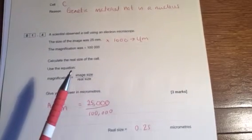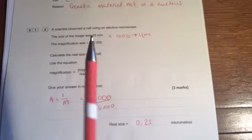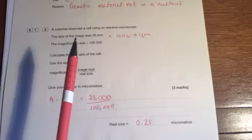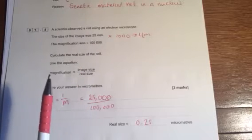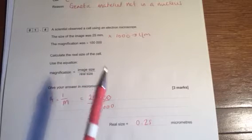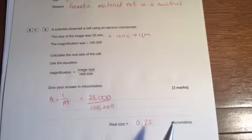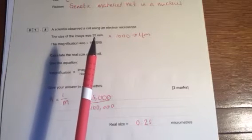Which cell is a prokaryotic cell? Cell C because there is no genetic material inside a nucleus, or if you'd have said no nucleus that's absolutely fine. A scientist observed a cell using an electron microscope. The size of the image was 25 millimeters. We've got to calculate the real size of the cell. Now we've got to do this in micrometers. So remember what I said before, easier to convert first.